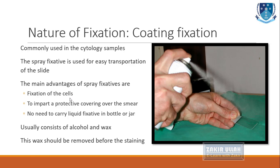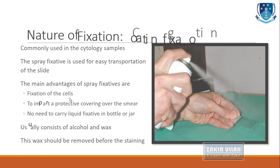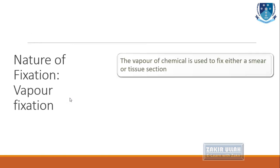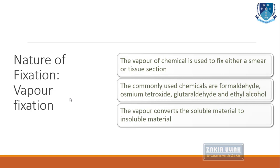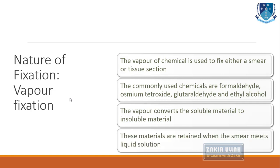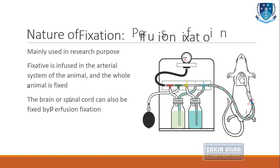The wax present on the smear must be removed before staining, as it hinders the staining process. Vapor fixation is a type of fixation in which the vapor of a chemical is used to fix a smear, tissue section, or organ. Commonly used chemical substances for vapor fixation include formaldehyde, osmium tetroxide, glutaraldehyde, and ethyl alcohol. The vapor converts soluble material into insoluble material, which is retained when the smear meets liquid solution or staining dyes.